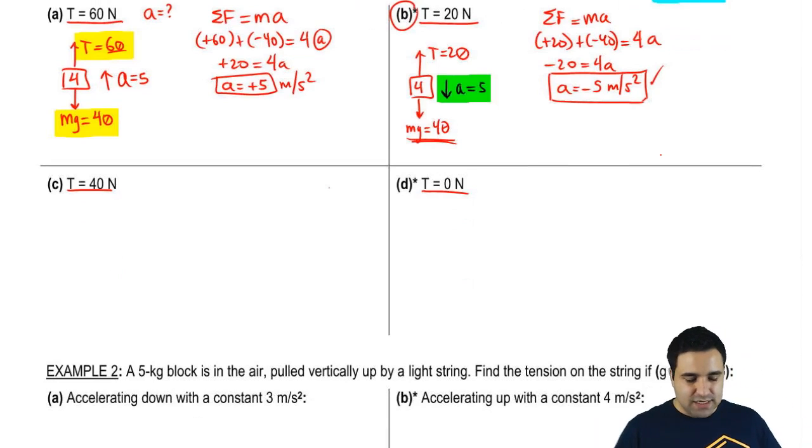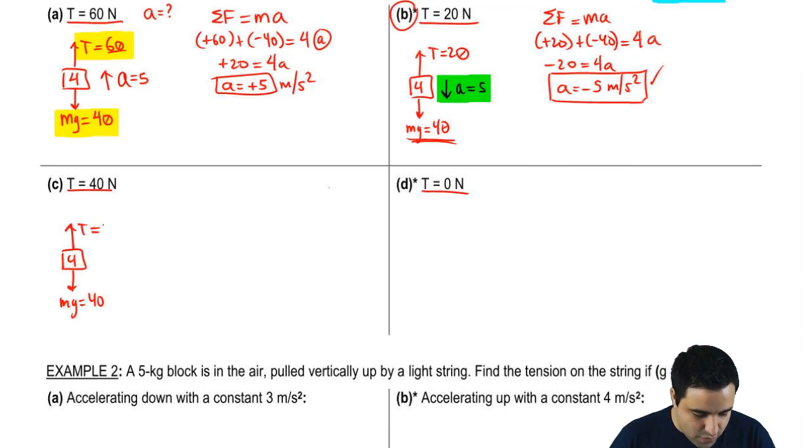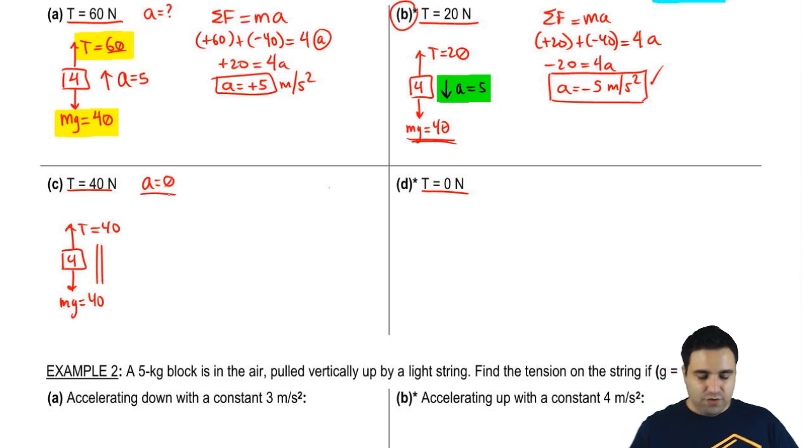Let me do the next one. Here the tension is 40. So I have an mg of 40, and the tension is 40. Now if you look at these, they have the same magnitude. These forces cancel. This is called equilibrium, and this means the acceleration is going to be simply 0. If you don't quite see it, you could actually just do the same steps up here, and you're going to get this answer.